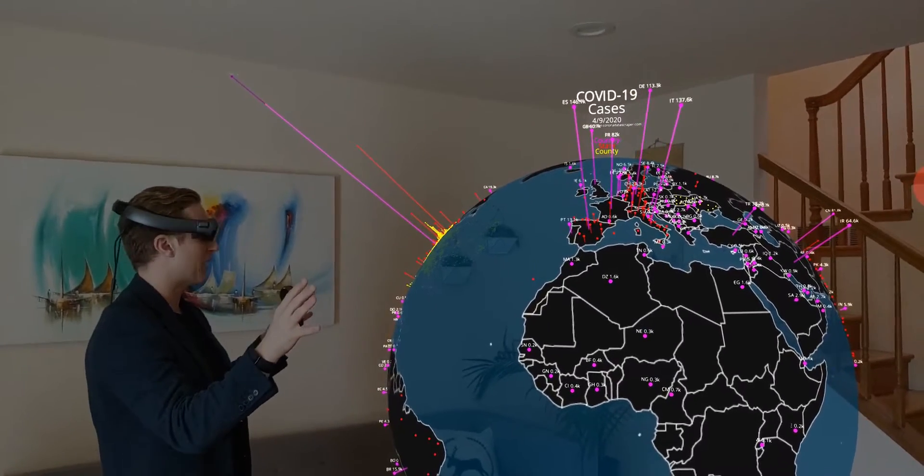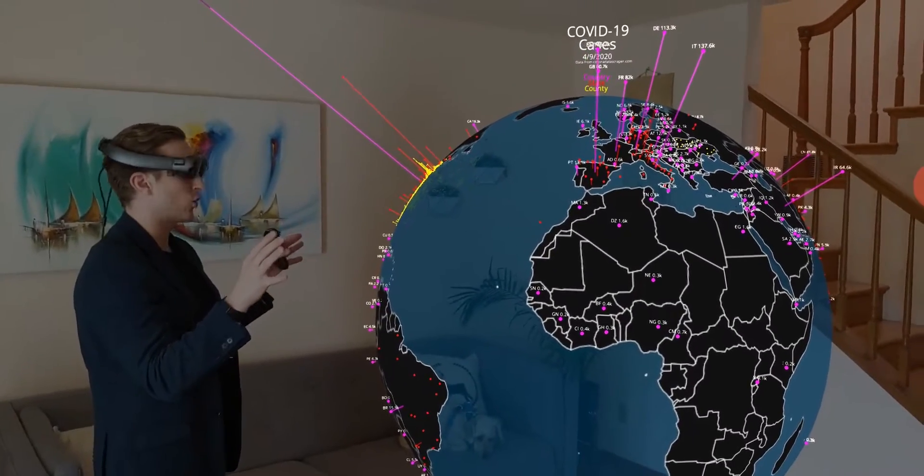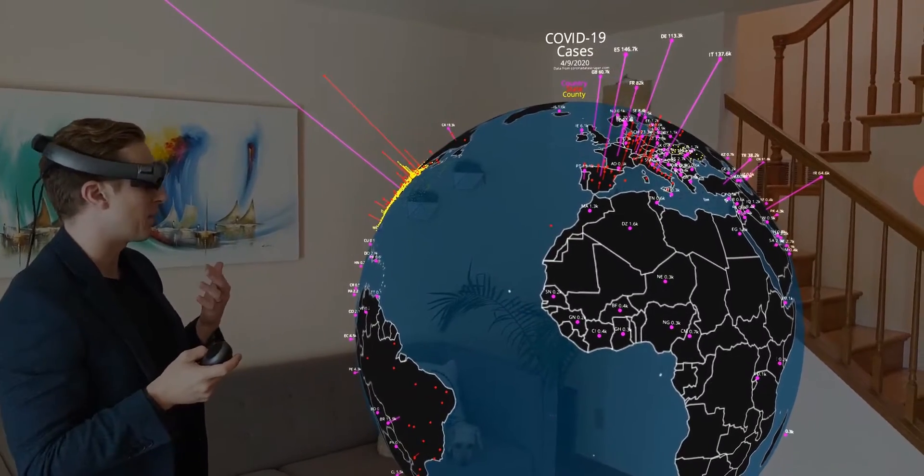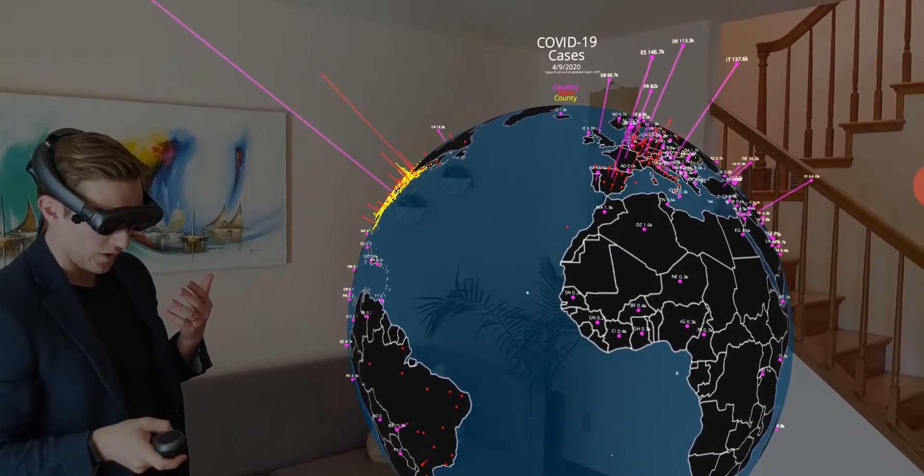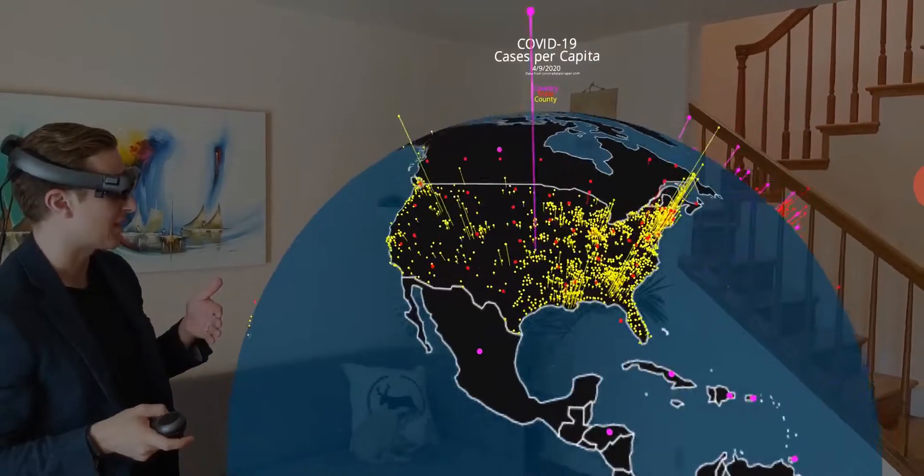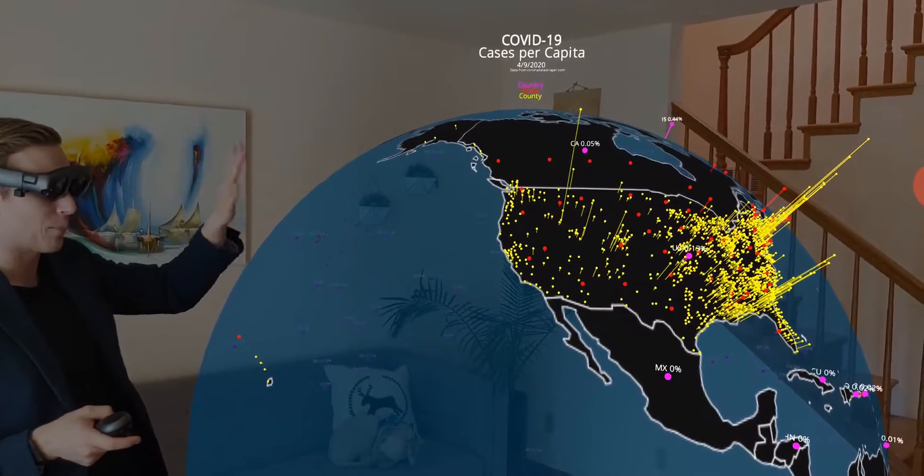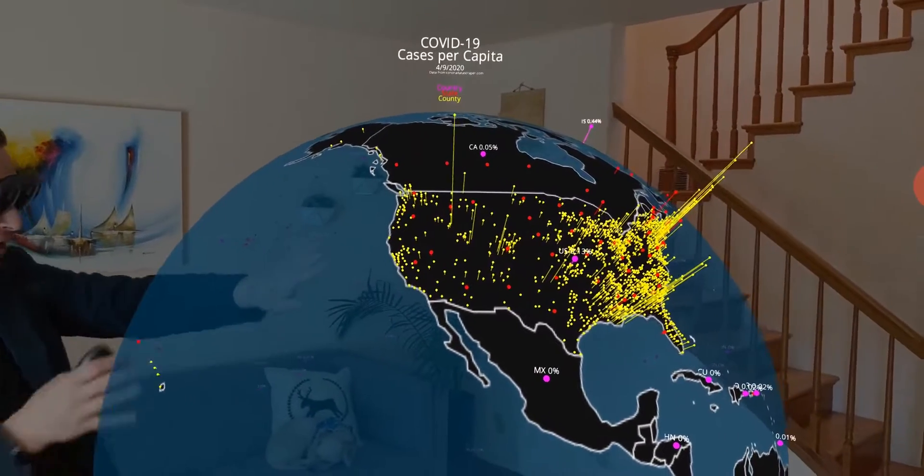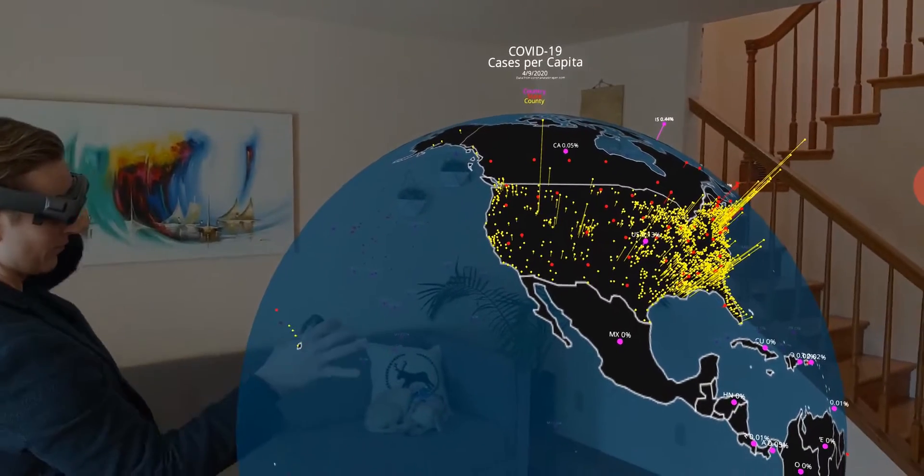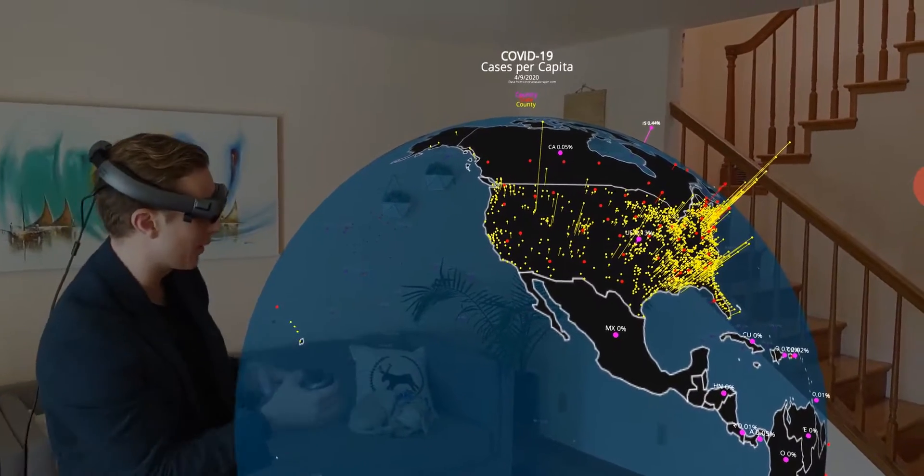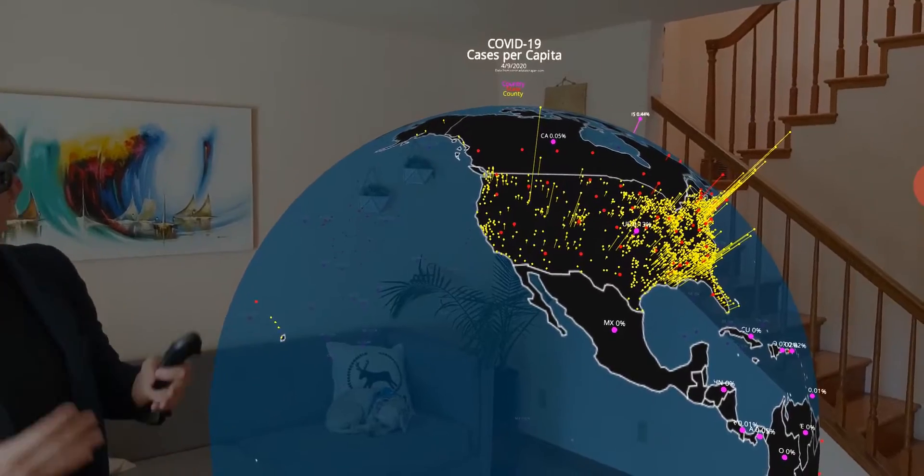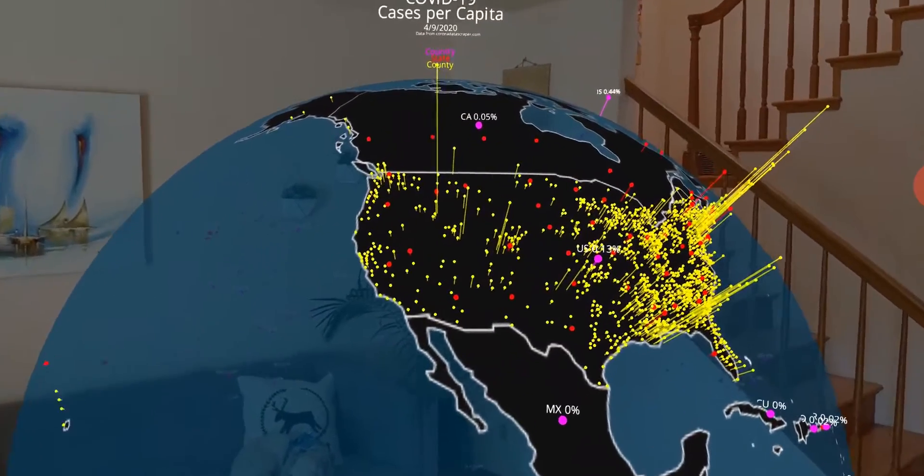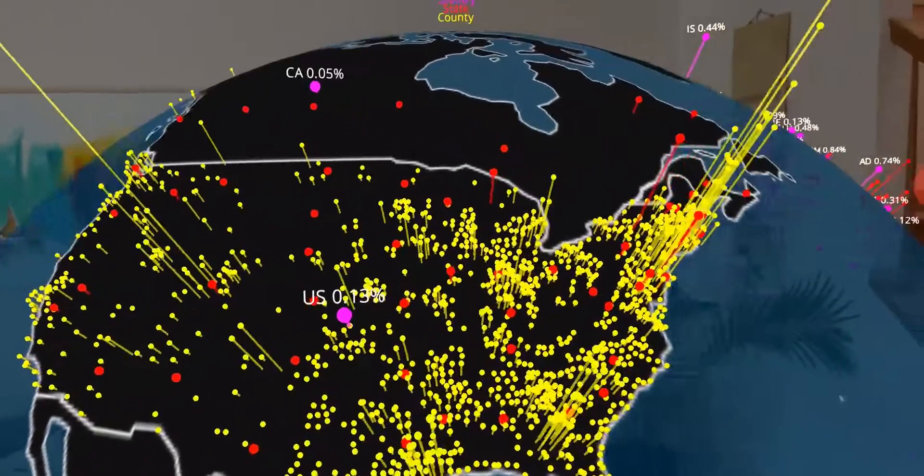And so while this is interesting, I think it paints a picture that is not necessarily representative of the population density. And so if we take into account the population density, we're going to look at the cases on a per capita basis. And now the U.S. is much smaller in terms of the country, and Europe actually starts to light up in terms of the percentage of the population that's actually infected in Europe.